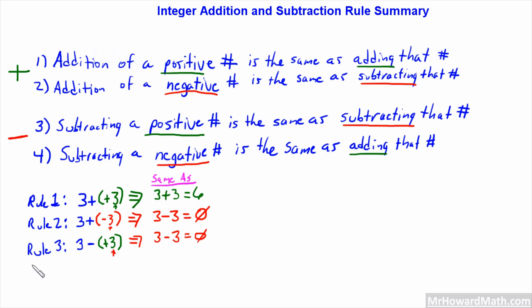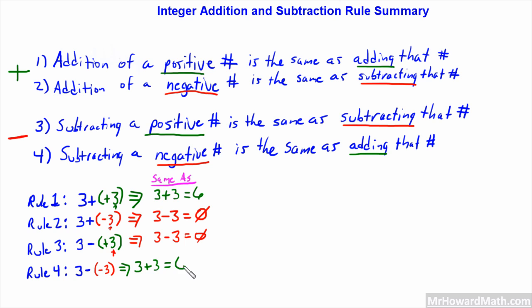Rule 4 example — the last one: Three minus negative three. Subtracting a negative number is the same as adding that number. So three minus negative three becomes three plus three, which equals six.